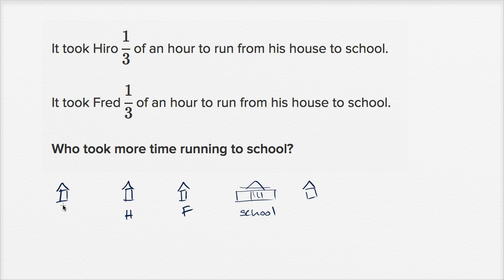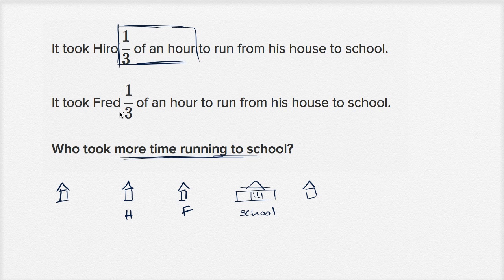Remember, they're not saying whose house is closer or further away or even who ran faster. They're telling us who took more time running to school. And they directly tell us the amount of time they took. Hero took one third of an hour to run from his house to school. And Fred took exactly one third of an hour. I don't know who ran faster or slower or who went further distance or shorter distance. But I know that they both took the same amount of time.